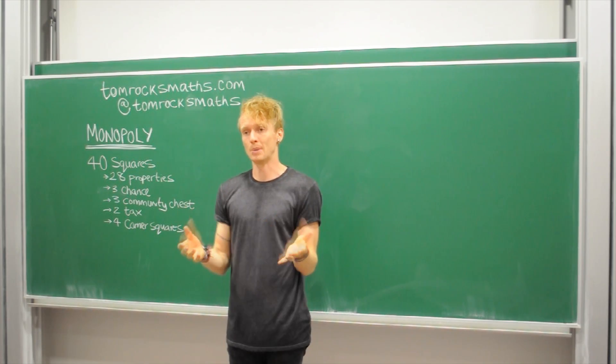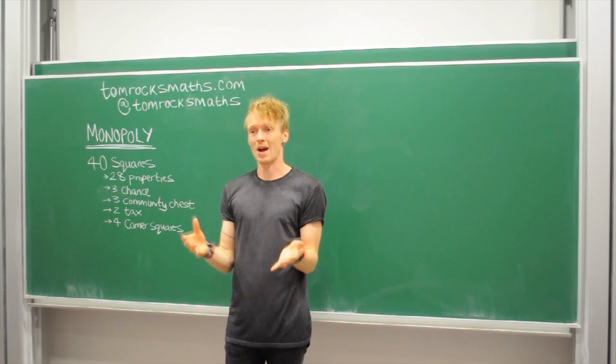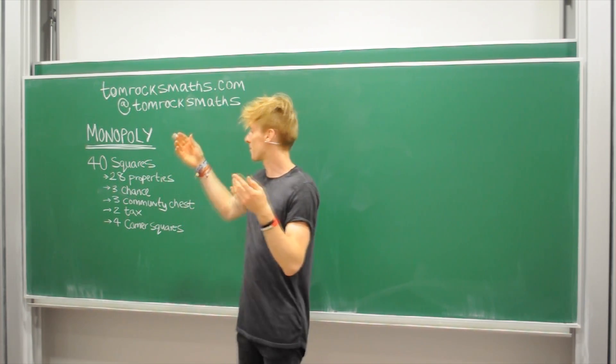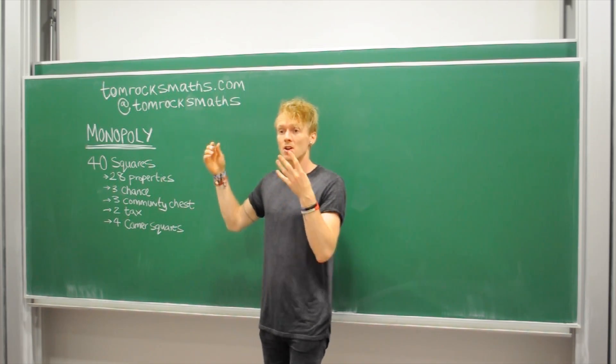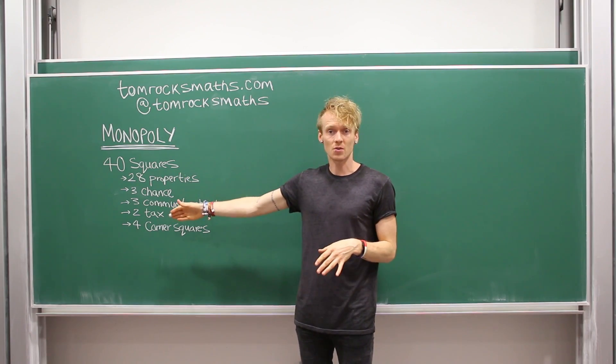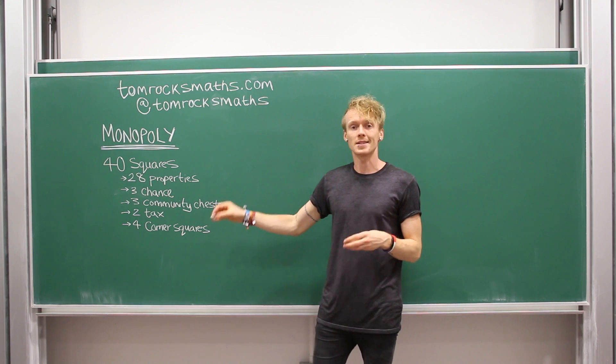So on a Monopoly board you have 40 squares in total. I've broken it down here. So you have 28 properties, we have three chance squares, three community chest squares, two tax squares.